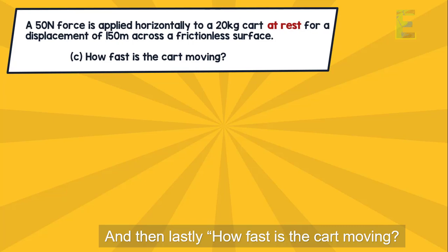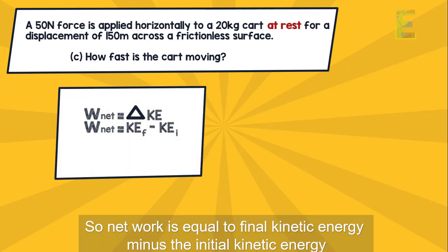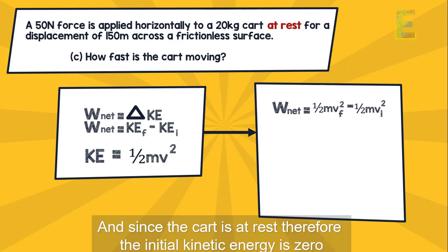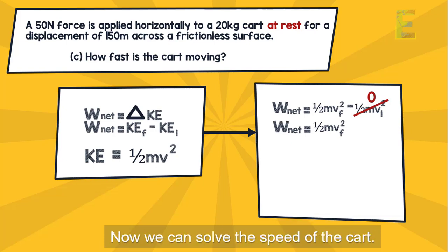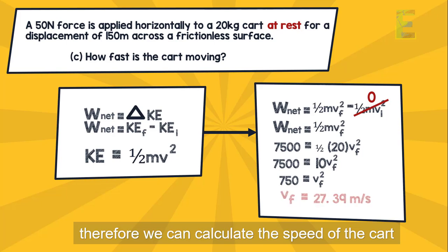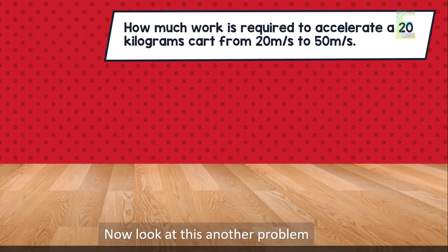Lastly, how fast is the cart moving? Applying the work-energy theorem again: net work equals final kinetic energy minus initial kinetic energy, and kinetic energy equals one-half mv squared. Since the cart starts at rest, the initial kinetic energy is zero. The net work is 7,500 joules and the mass is 20 kilograms, so we can calculate the speed of the cart.